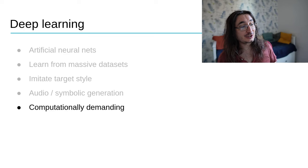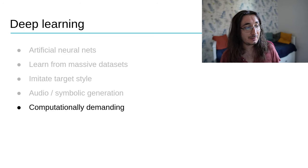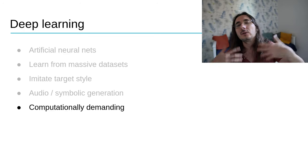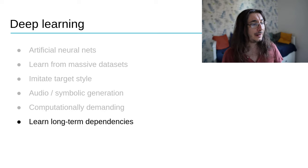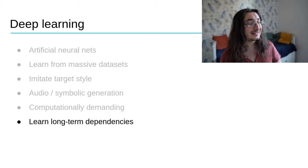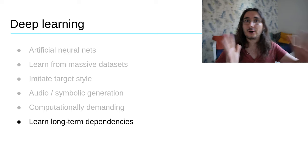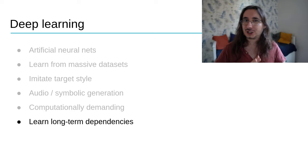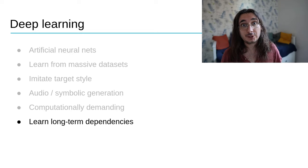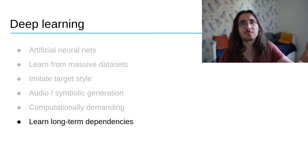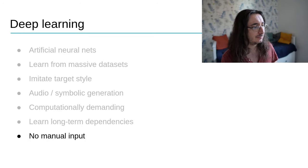The problem with deep learning is that these algorithms tend to be quite computationally demanding and require a lot of data. But the great thing is that they are usually able to learn longer or longish-term dependencies. This is still a problem though, as we'll see in the next video where we look at limitations and future prospects for generative music research.